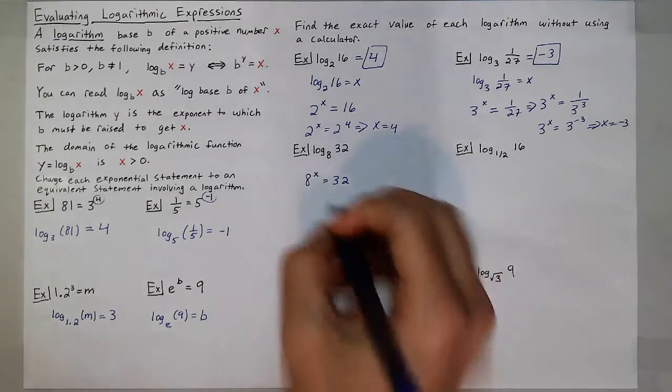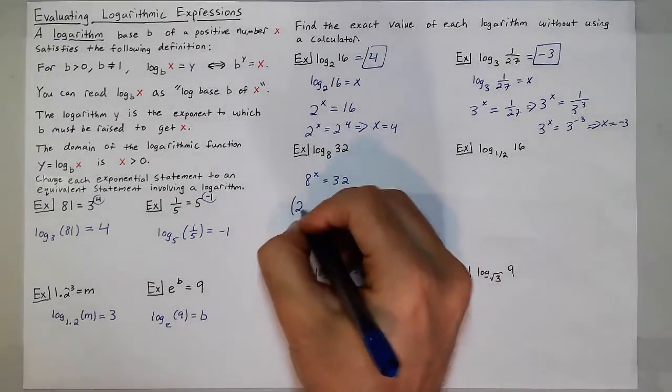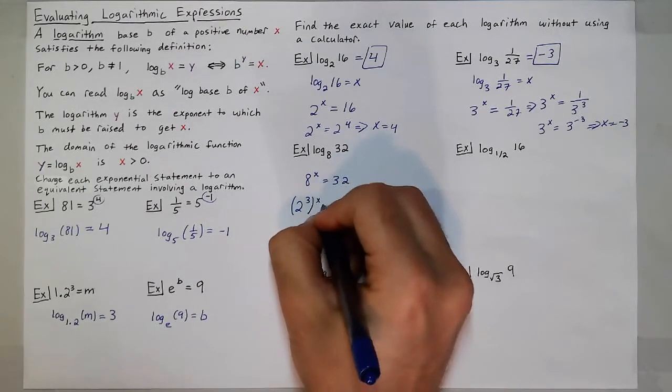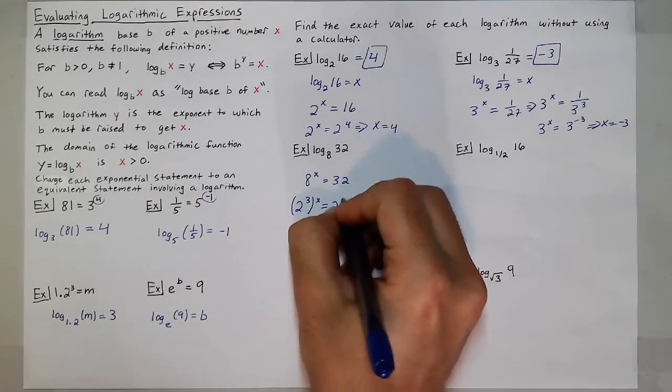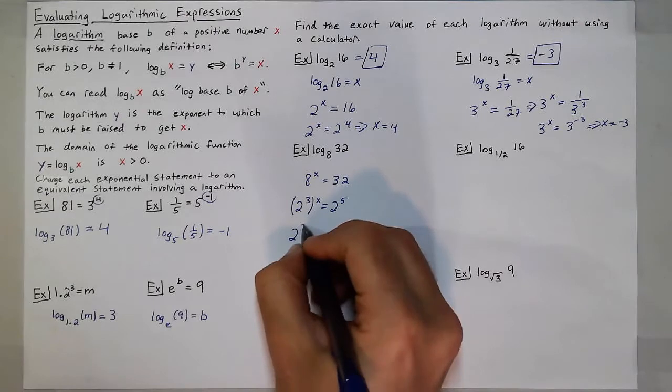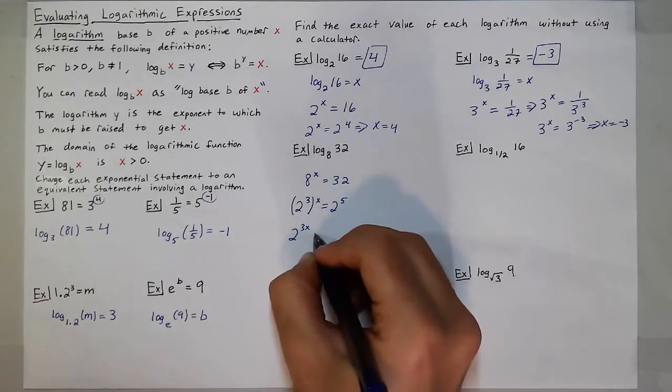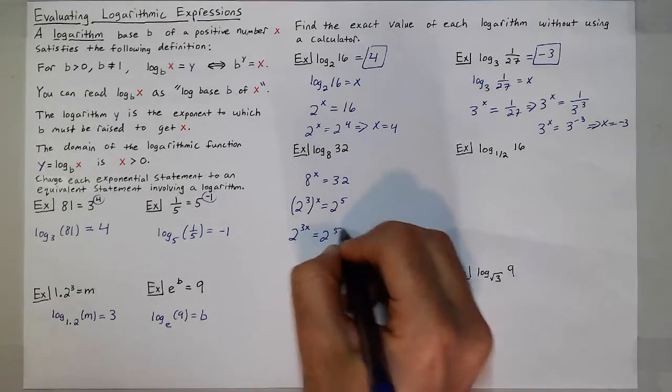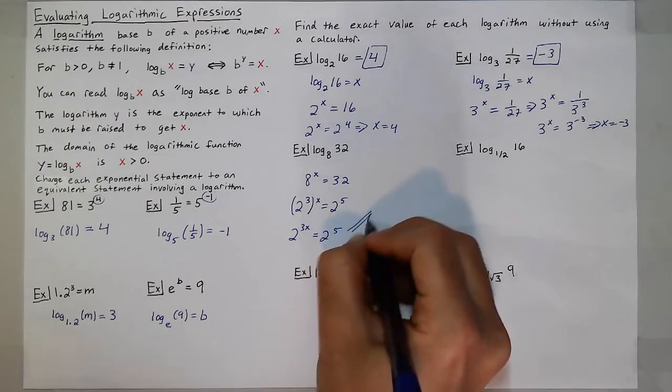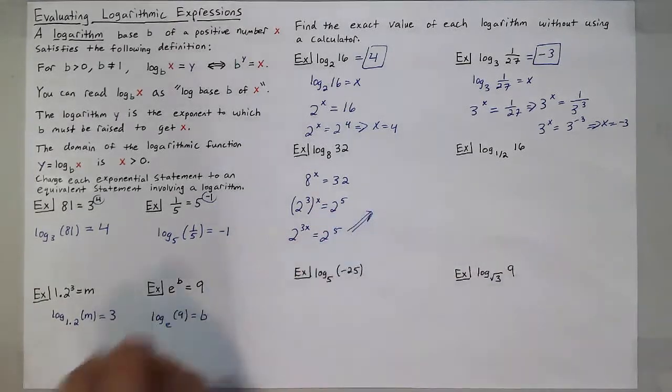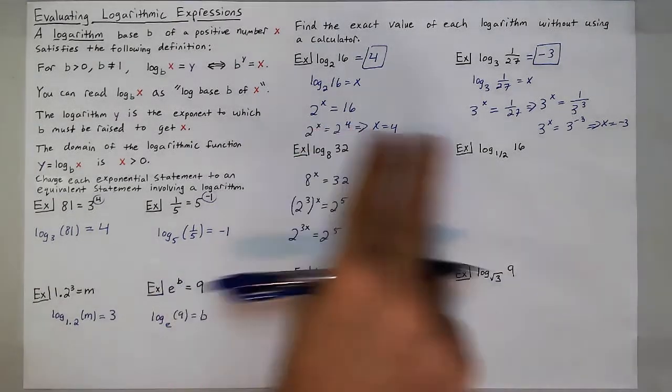So I can rewrite 8 as 2 to the 3rd. And 32 as 2 to the 5th, leaving me with 2 to the 3x when you multiply those exponents. And 2 to the 5th, which gives me a statement that 3x should equal 5 since those bases are the same, like we've seen in the other two examples.